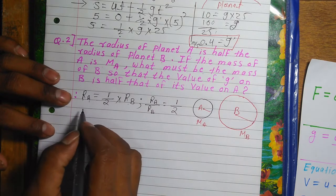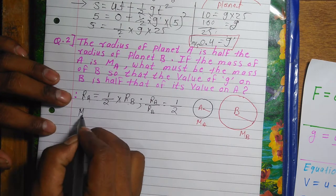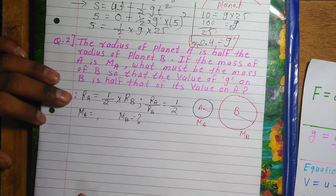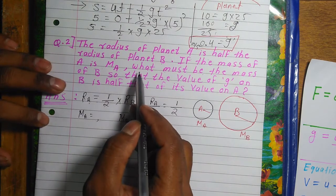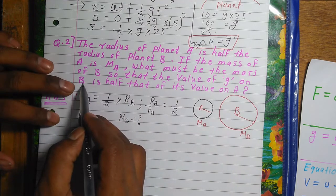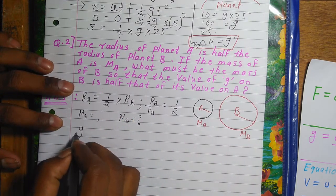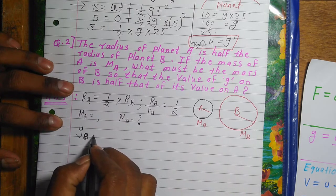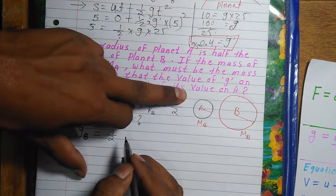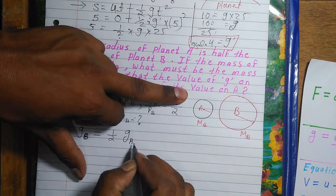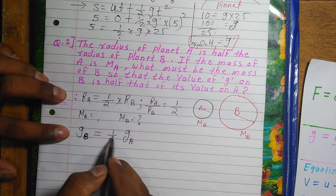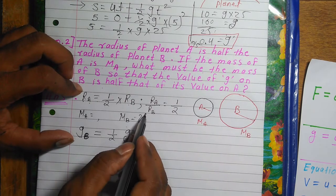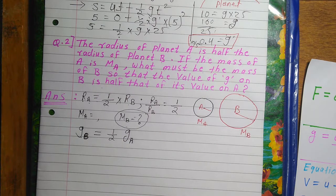Since g, R, and M are all involved, we use the formula for acceleration due to gravity: g = GM/R². For planet A: gA = G·MA/RA². For planet B: gB = G·MB/RB². We divide these two equations to find the ratio. Since G is a universal constant it cancels out.